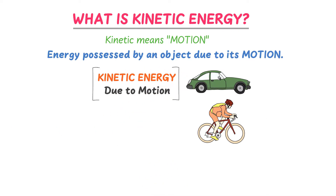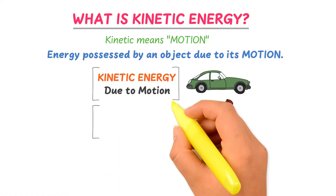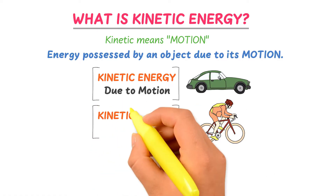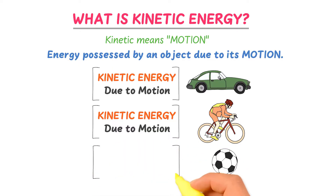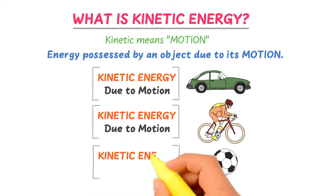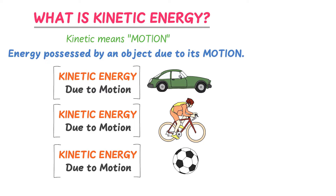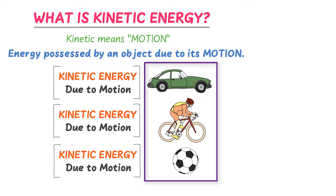Consider a fast-moving bicycle — it possesses kinetic energy due to its motion. Consider a fast-moving football — it also possesses kinetic energy due to its motion. From these three examples, we learn that if an object is moving, it possesses kinetic energy.